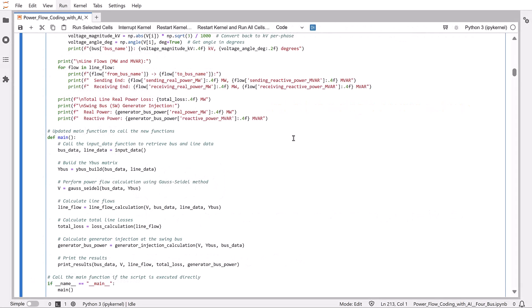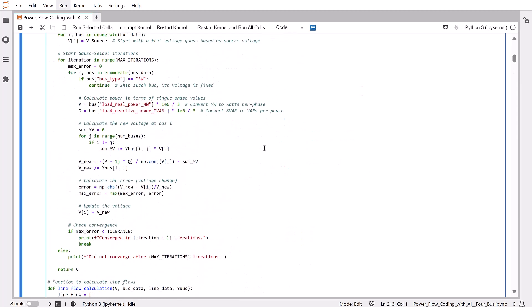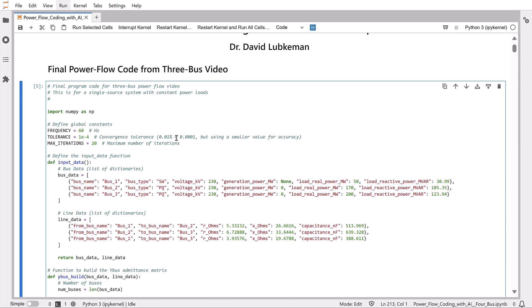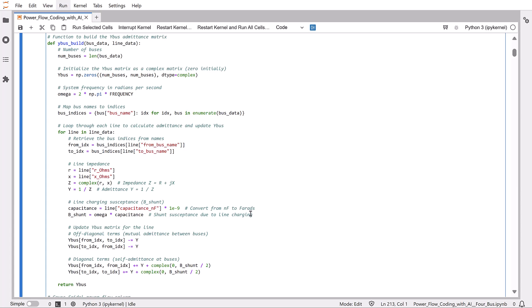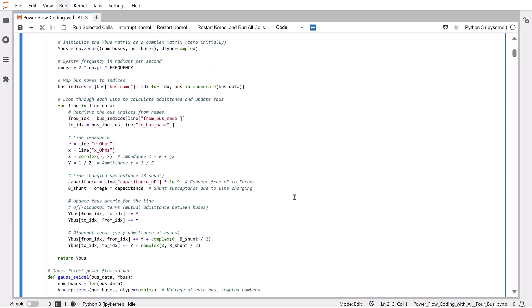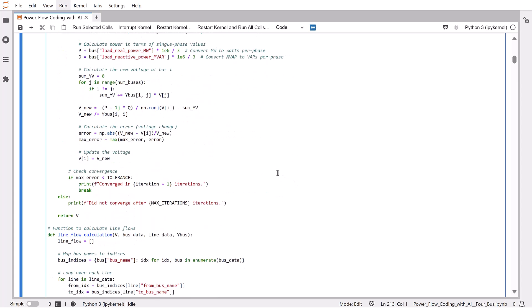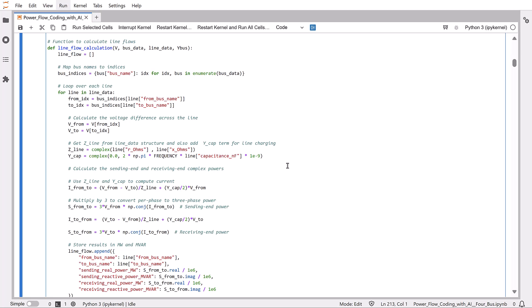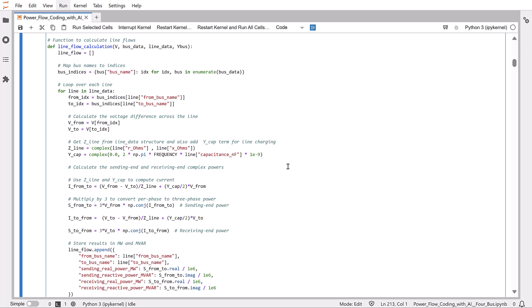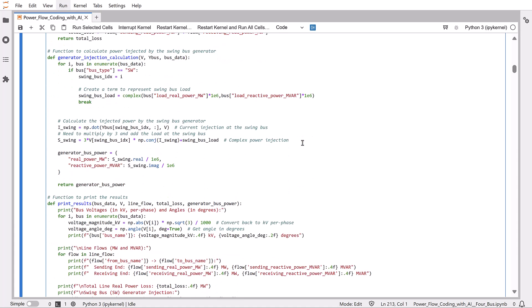Here we see the 3-Bus PowerFlow code, which will serve as our starting point in this video. The various functions are all called from a main program function. The input data function creates the data structure, which we need to update in this video. This is followed by the Y-Bus building function call, which will not need to be modified. The iterative voltage update is implemented in the Gauss-Seidel function. Once we have the converged voltage, there are additional functions called for computing and printing line flows, losses, and generator power injection.